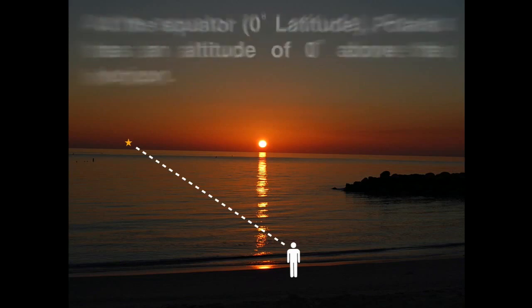So because of this, at the equator, which is a zero degree latitude, Polaris has an altitude of zero degrees. So its height above the horizon is right on the edge. It would be right at the edge of the horizon.